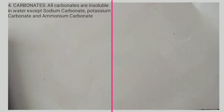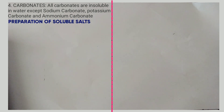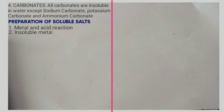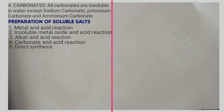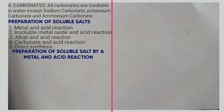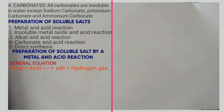Next we look at how to prepare soluble salts. Soluble salts are prepared by five ways. In today's lesson we look at preparation by the metal-acid reaction. The general equation is: metal + acid → salt + hydrogen gas.